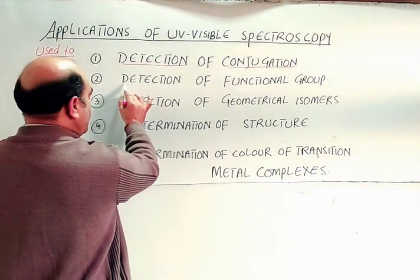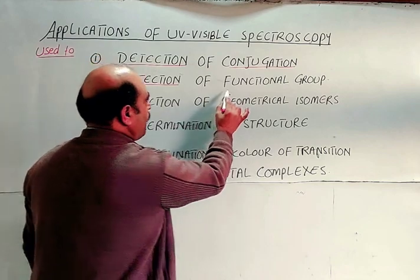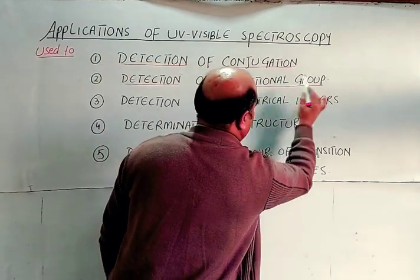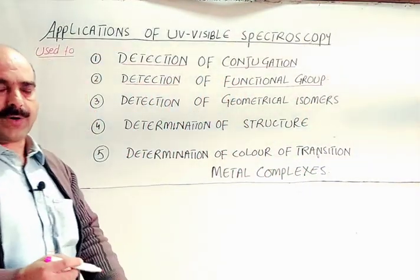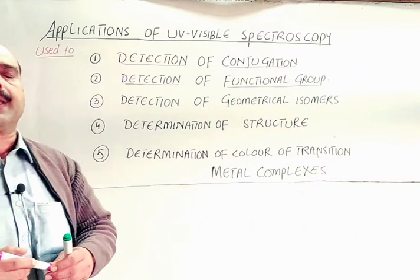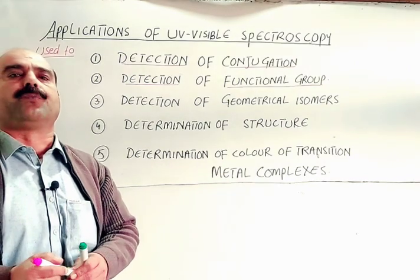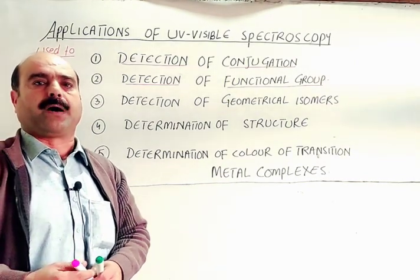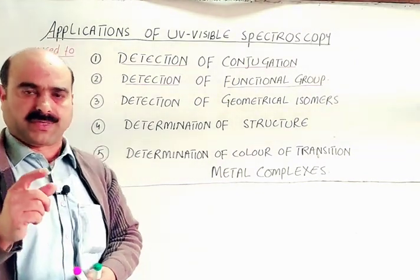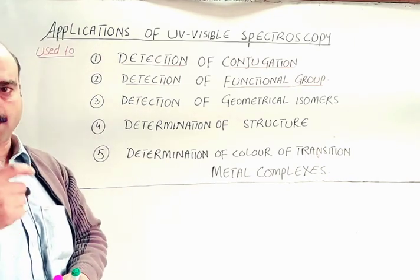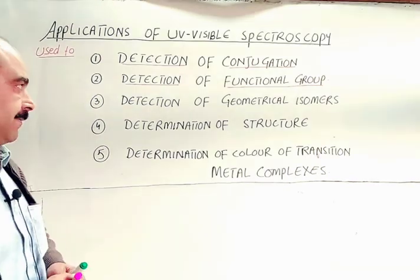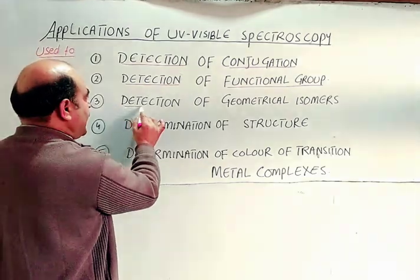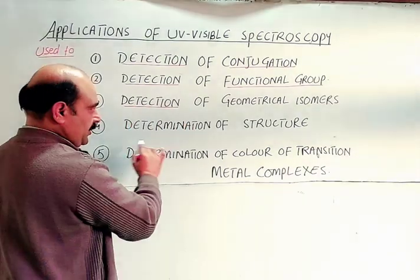Number two: UV-Visible Spectroscopy is used for the detection of functional groups in an organic compound. With the help of this modern technique, we can identify the functional groups present in an organic compound.